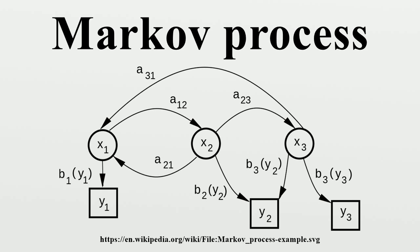A Markov process is a stochastic process which satisfies the Markov property with respect to its natural filtration. For discrete Markov chains, in the case where the state space is a discrete set with the discrete sigma algebra, this can be reformulated as follows. Examples: Gambling. Suppose that you start with $10, and you wager $1 on an unending, fair coin toss indefinitely, or until you lose all of your money. If the sequence represents the number of dollars you have after N tosses, then the sequence is a Markov process.